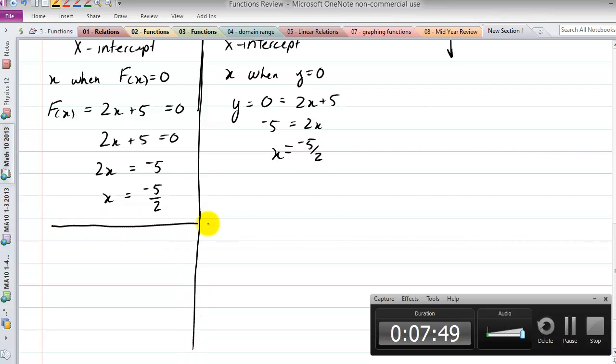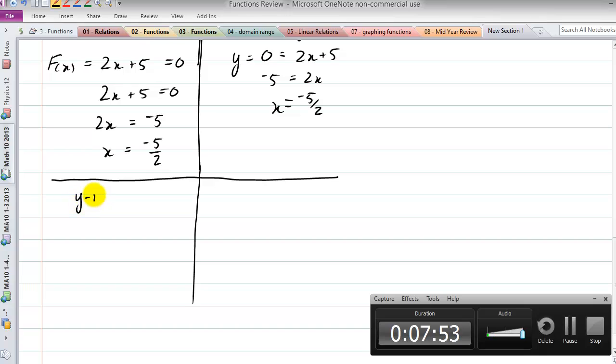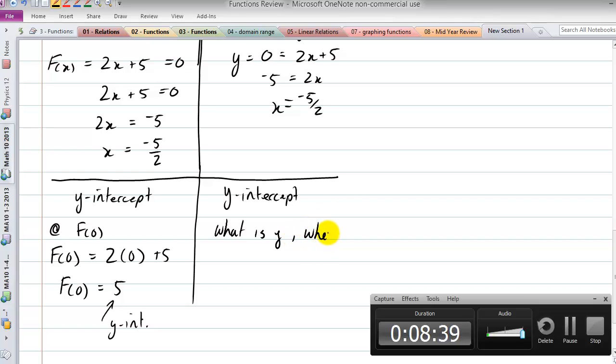And the last thing to cover then is y-intercept. And this is at f(0), so f(0) equals 2 times 0 plus 5, f(0) equals 5. So that is the y-intercept. And then the two-variable equation is: what is y when x equals 0?